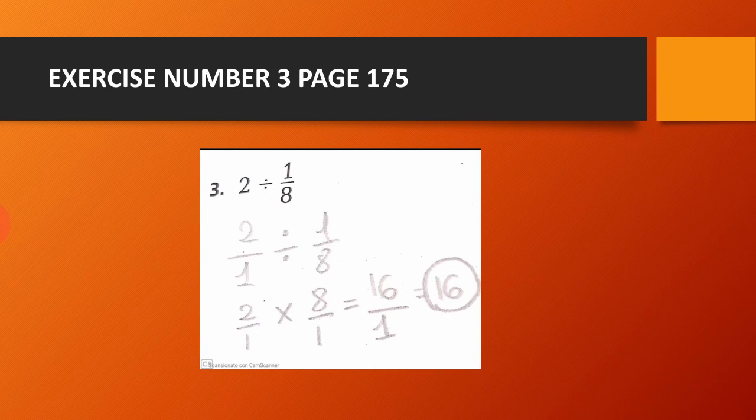Exercise number 3, page 175. We have 2 divided by 1 over 8. We transform the 2 into a fraction, so it becomes 2 over 1 divided by 1 over 8. Then we use the rule: keep, change, flip.